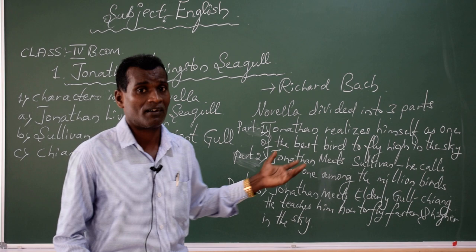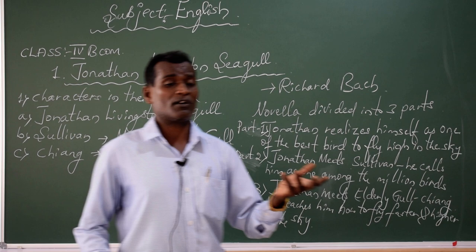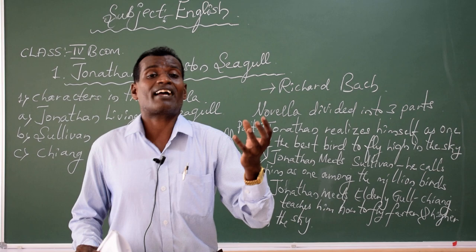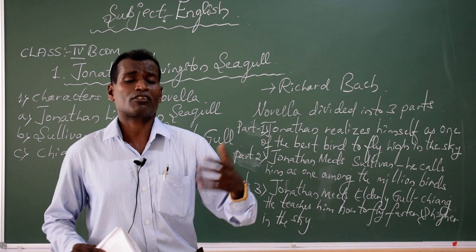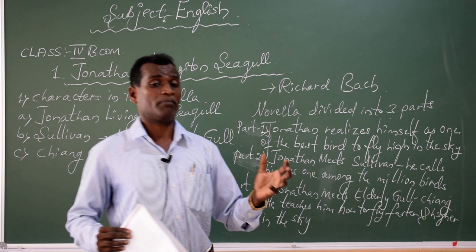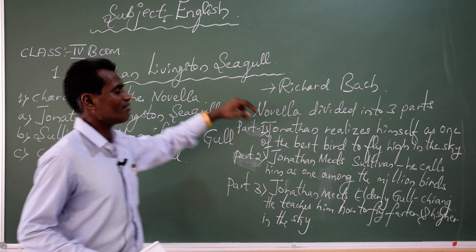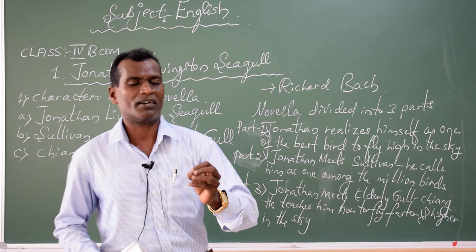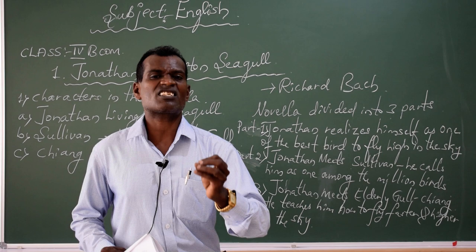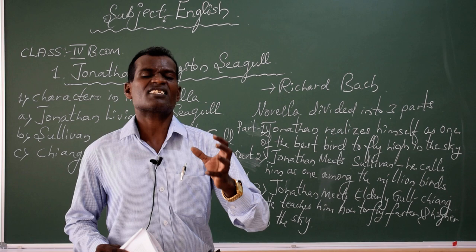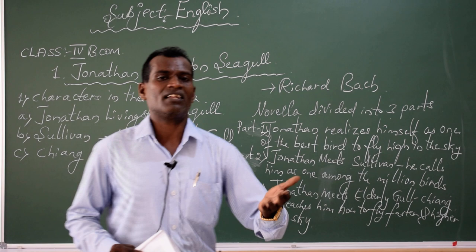Everyone in the bird community is going to appreciate and talk about Livingstone Seagull — how he flies and what kind of extraordinary caliber he has got. Everyone is questioning Jonathan Livingstone: how is it possible, being a normal bird? Jonathan Livingstone Seagull is one of the best novellas written by Richard Bach, which speaks about how no one can stop anyone's ambition, determination, and reaching of goals — unless one realizes that he has a capability, a caliber, and extraordinary talent.